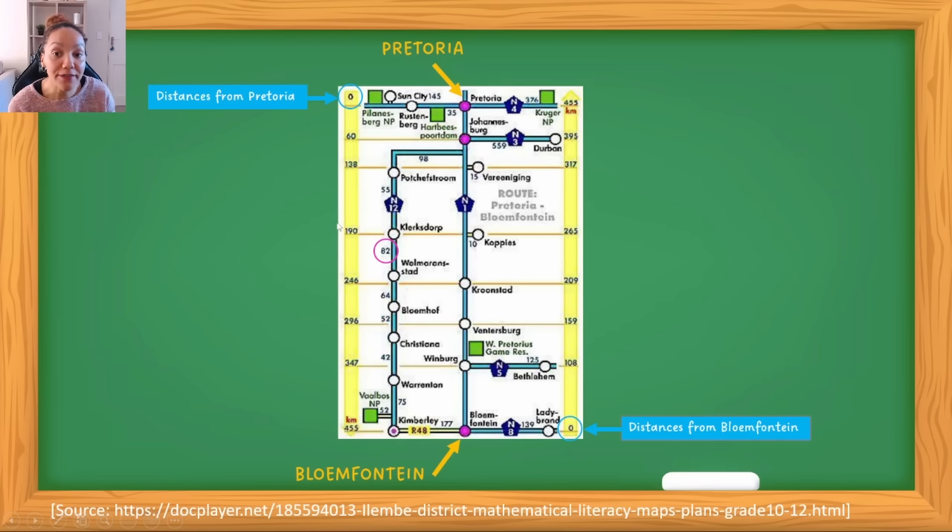As I go right up to the top, you will see I end up at 455 because ultimately this is the distance between Bloemfontein and Pretoria. On the left hand side, you've got distances from the top starting at zero, which are the distances from Pretoria. On the right, you have the distances from Bloemfontein.